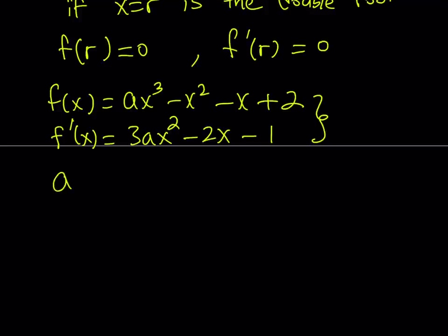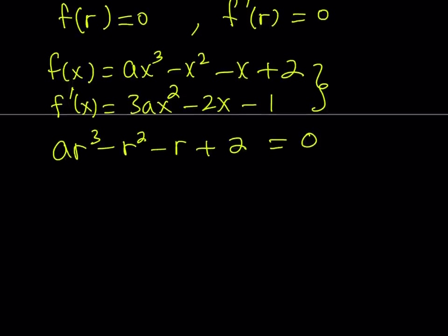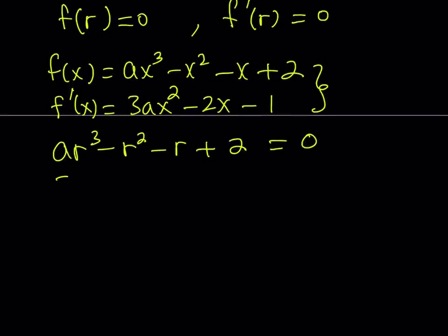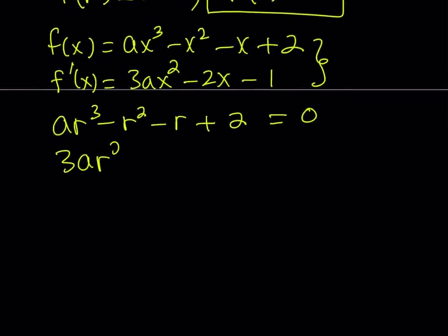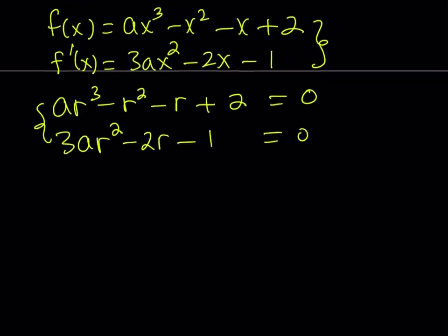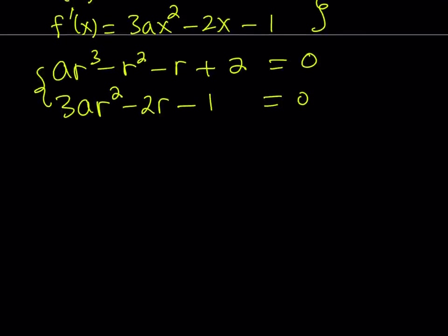The first equation gives us: a r cubed minus r squared minus r plus 2 equals 0. That's my first equation. The second equation — using f prime of r equals 0 and replacing x with r — gives us: 3a r squared minus 2r minus 1 equals 0. Now looking at this system of equations, we have two variables and two equations, so hopefully we're going to be able to solve this. This is the first method.